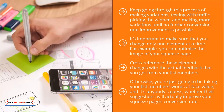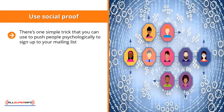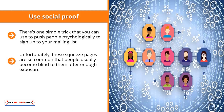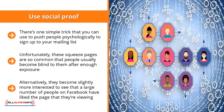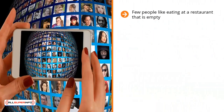Use social proof. There's one simple trick you can use to push people psychologically to sign up to your mailing list. We've all seen squeeze pages before — typically there's an email field, a call to action, and a submit button, maybe with a nice-looking graphic on the side. Unfortunately these squeeze pages are so common that people usually become blind to them. However, people do pay attention when they see that their Facebook friends have signed up to the list, or when they see that a large number of people on Facebook have liked the page they're viewing. This is called social proof.